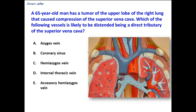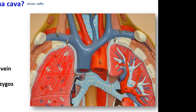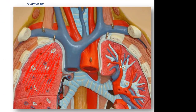Here you can see the relation of the upper lobe of the right lung to the superior vena cava. This is the upper lobe of the right lung, and you can see the close relation to the superior vena cava. So which of the veins is likely to be distended, being a direct tributary of the superior vena cava? What are the direct tributaries here?